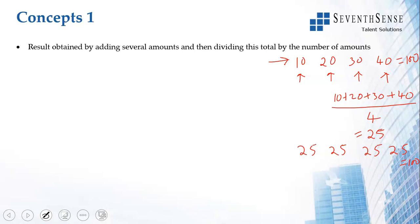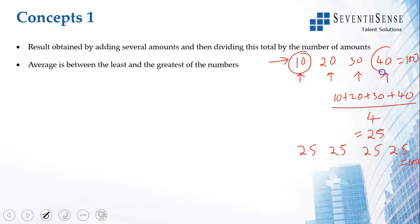Whenever you get an average, irrespective of how many numbers there are or how spread apart they are, your average cannot be lower than the lowest number and cannot be higher than the highest number. It has to lie somewhere in between. If it is lower than the lowest or higher than the highest, the calculations are definitely wrong.